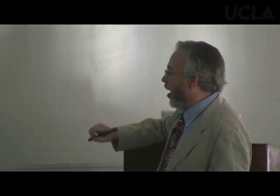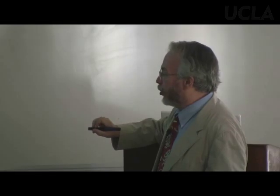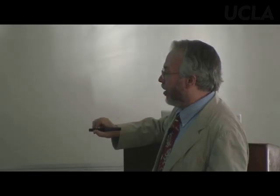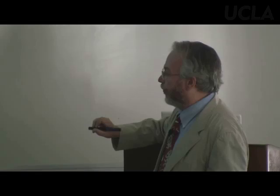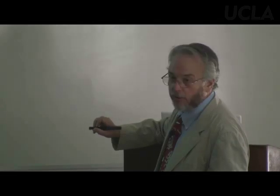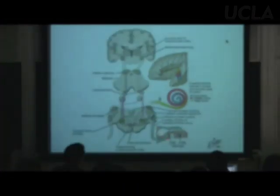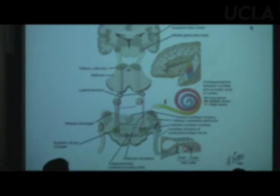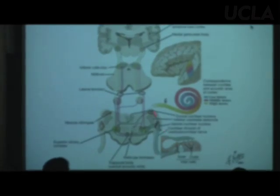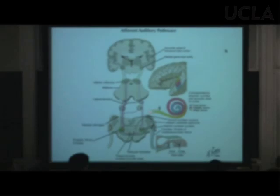If you have damage to the cochlea, the nerve, or this first nucleus, the hearing loss is going to be ipsilateral — that is, on the same side as the damage.